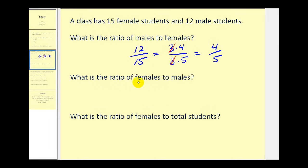If we want the ratio from females to males, that would be 15 to 12, which would simplify to 5 to 4.